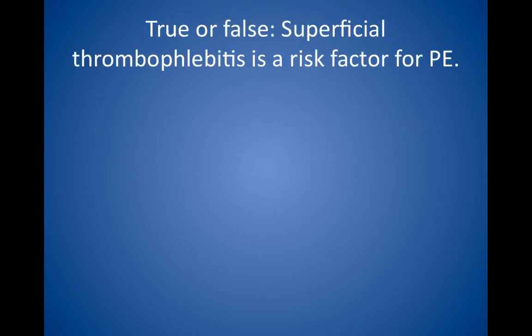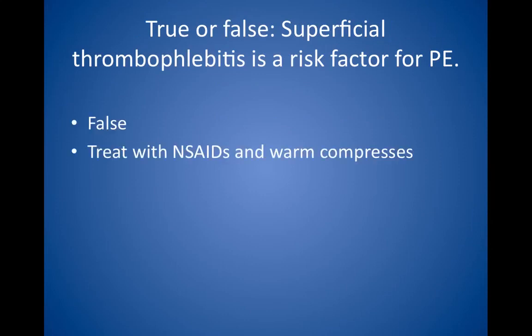True or false: superficial thrombophlebitis is a risk factor for pulmonary embolus. False. Superficial thrombophlebitis, which presents as erythema, tenderness, edema, and a palpable clot in a superficial vein, affects the superficial veins and does not cause PEs. It is considered a benign condition, although recurrent superficial thrombophlebitis can be a marker for underlying malignancy. For example, Trousseau syndrome, or migratory thrombophlebitis, is a classic marker for pancreatic cancer. Treat affected patients with NSAIDs and warm compresses.